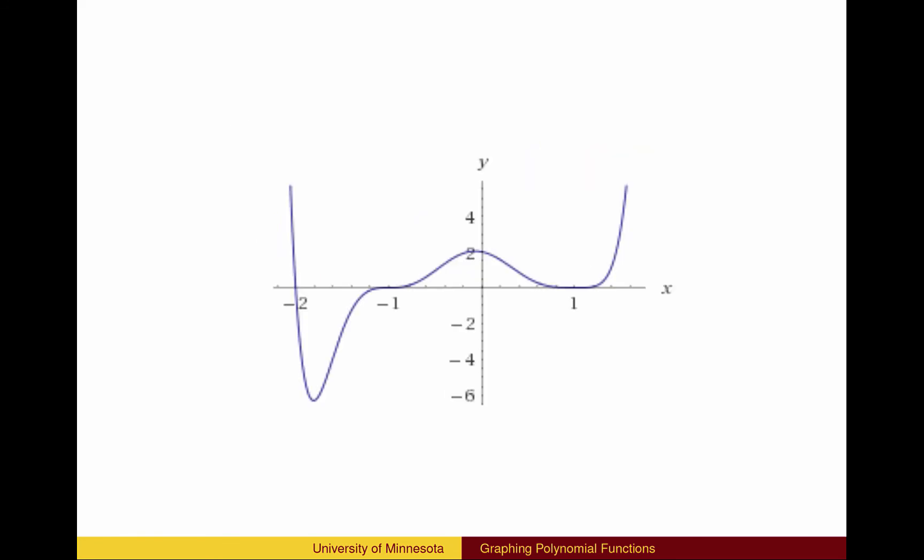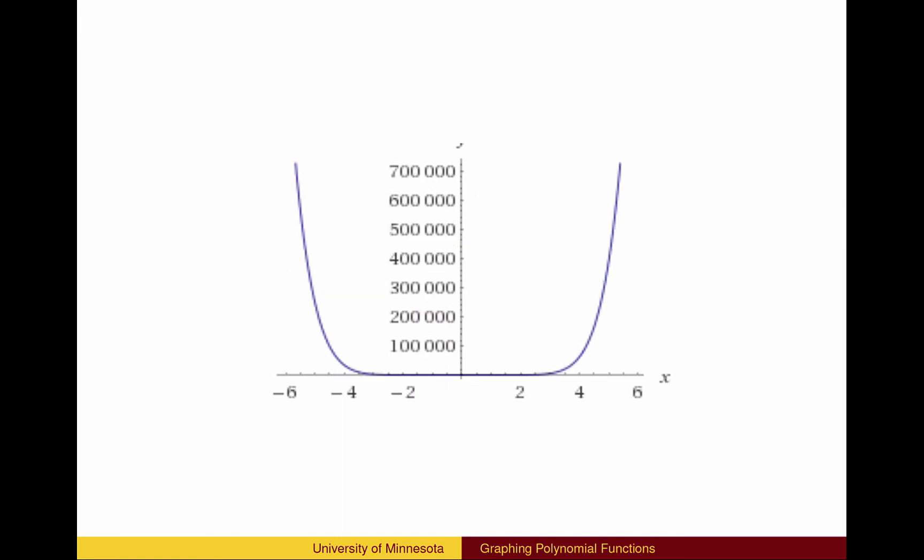Here is a screenshot of the graph from -2.2 to 1.7 using Wolfram Alpha, which shows the details of the intercepts. If we pan out to see the graph from -6 to 6, we see the end behavior that f(x) looks like a graph of the leading term x to the 8th, which is an even power of x.